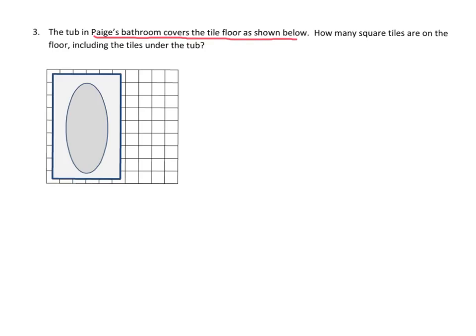This problem says: the tub in Paige's bathroom covers the tile floor, as shown below. Here's the bathtub and here's the floor with all the tiles. It asks how many square tiles are on the floor, including the tiles under the tub. So we need to find the area of this whole rectangle — and although it looks like a square, a square is a rectangle.